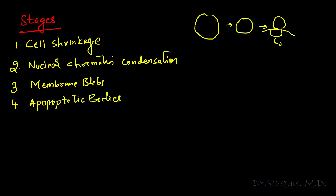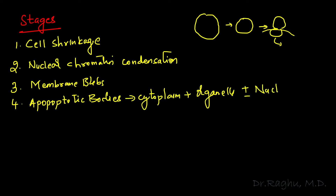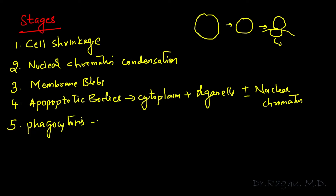Apoptotic bodies contain cytoplasm and tightly packed cell organelles, and may or may not contain nuclear chromatin. Importantly, the cell membrane remains intact throughout and is never ruptured — rupture of the cell membrane is characteristic of necrosis, not apoptosis. Ultimately, these apoptotic bodies undergo phagocytosis by macrophages, which is why there is no inflammation and no necrosis in apoptosis.